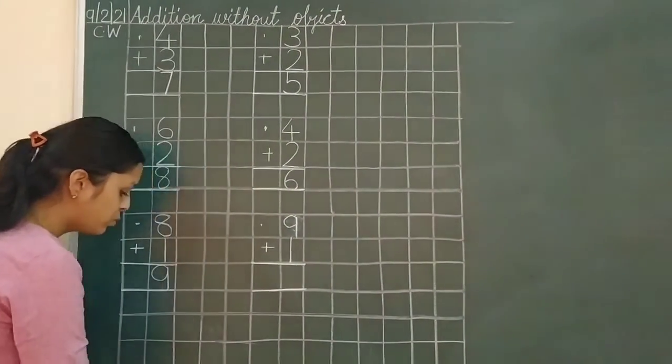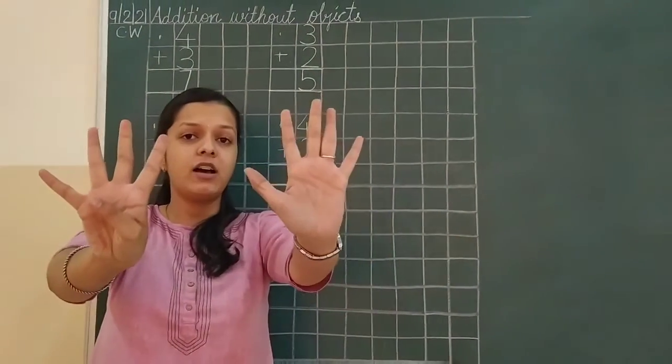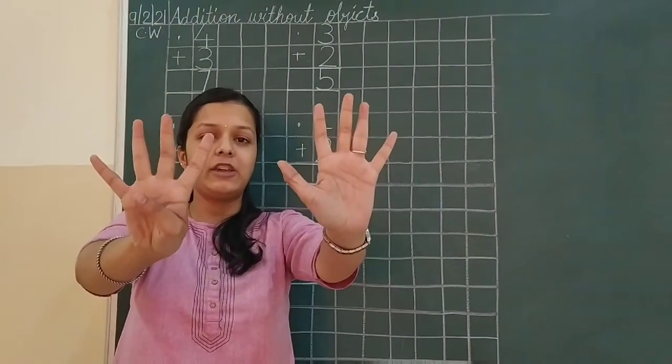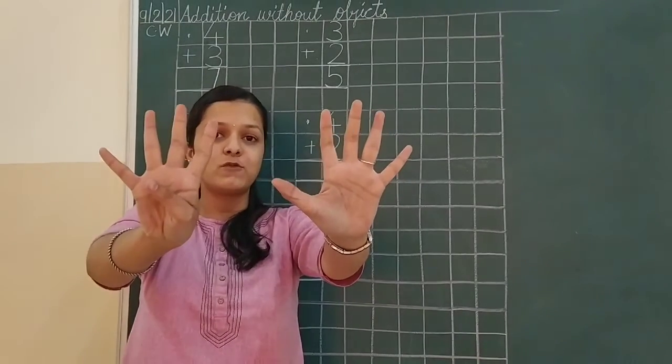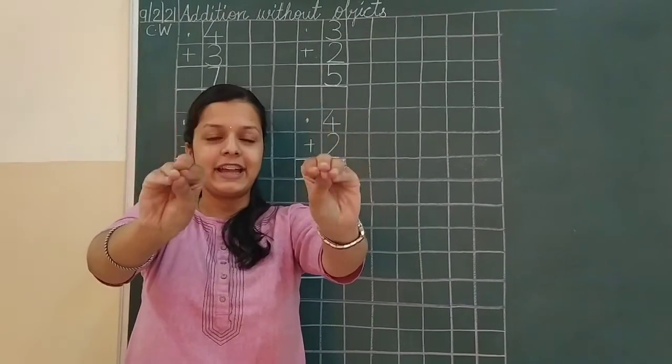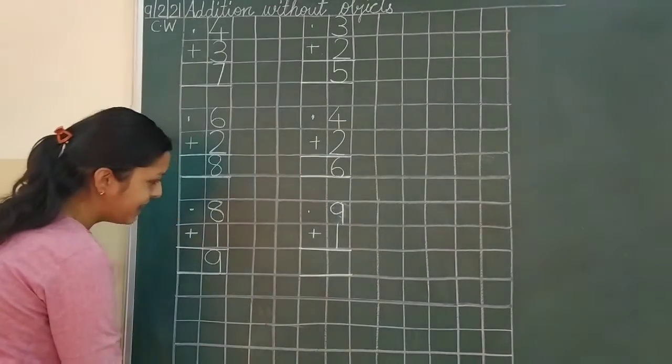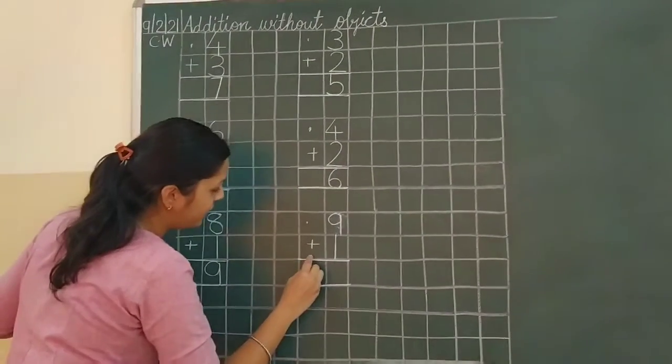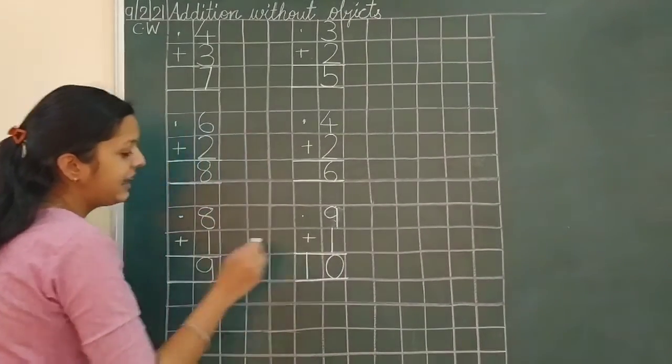Next, 9 plus 1. Now, 9 on my finger. 1, 2, 3, 4, 5, 6, 7, 8, 9. When I add one more number. How many? 10 fingers. So, answer is 10. You are going to write 1 over here. And 0. 10.